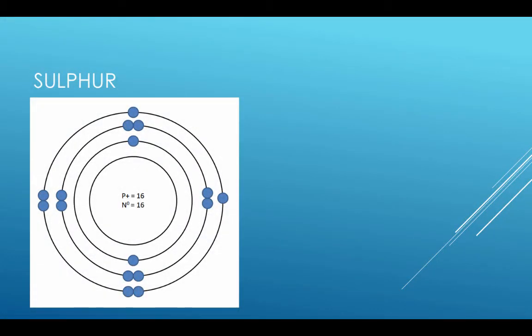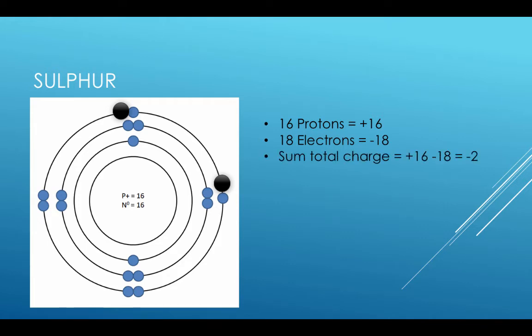What would happen if we added two electrons to elemental sulfur? Well, the proton number would still be 16, which provides a positive 16 charge. But now there would be 18 electrons, making a negative 18 charge. The sum charge would be positive 16 plus negative 18, resulting in a net charge of minus 2. This would be an ion of sulfur with a charge of negative 2.